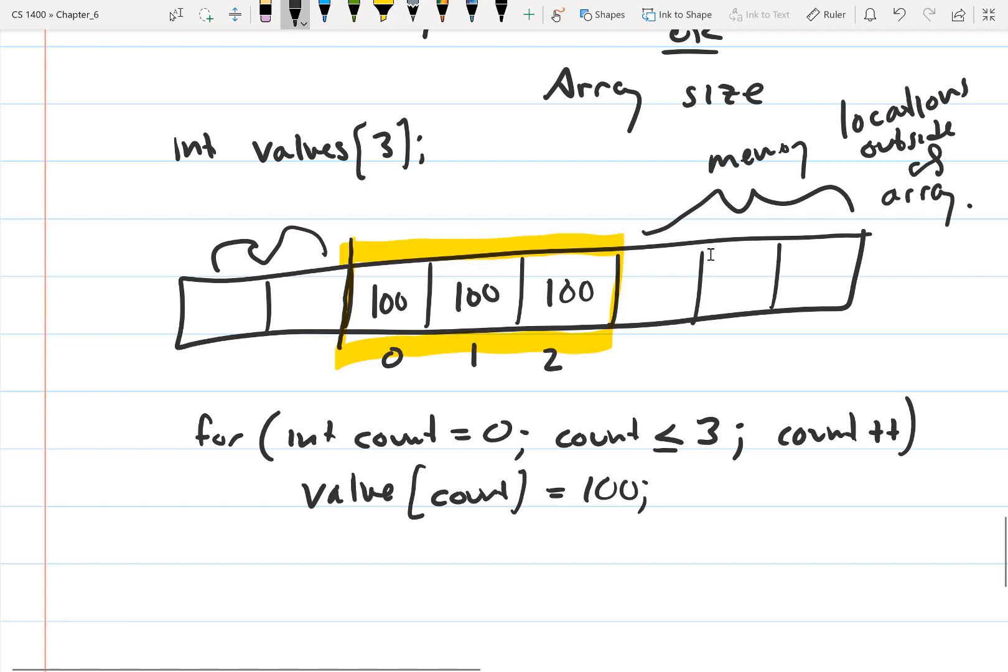But then, all of a sudden, count is equal to 3, value[3] equals 100. Well, what that's going to do is store 100 here. The problem with that is what we mentioned earlier: this doesn't exist in the array.